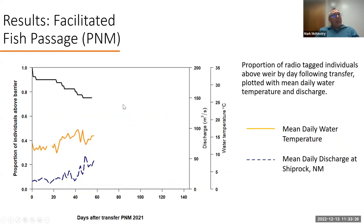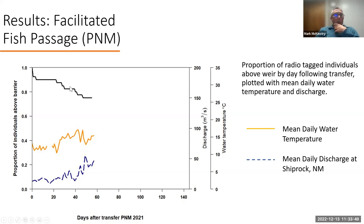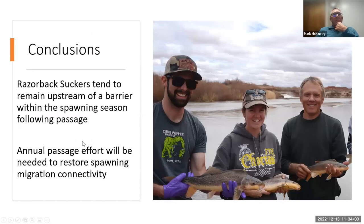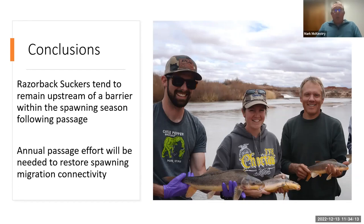If we look at PNM, it's a little different story. Fish moved upstream there tend to stay a little bit longer. We don't have complete data here because the tags died out and Matt completed his thesis at this point. But the fish at PNM — 150 miles upstream — after day 20 there's not as steep a drop-off as at the waterfall. As a rule, fish at PNM tend to stay upstream longer, probably taking advantage of habitat that wasn't normally available to them up there. In conclusion, razorback suckers tend to remain upstream of a barrier really just within that spawning season following passage.